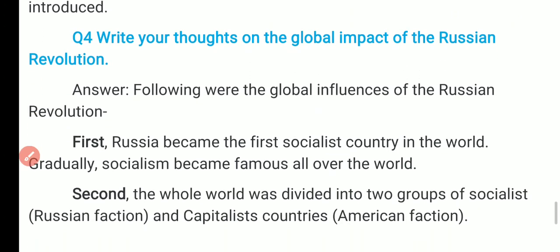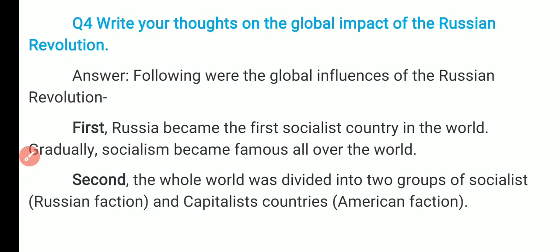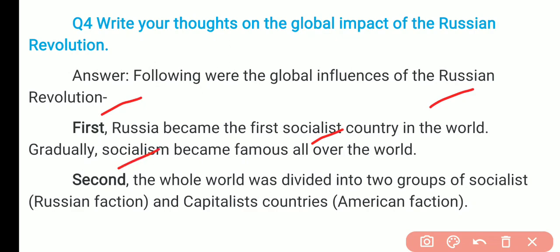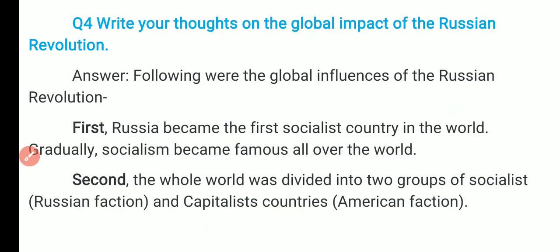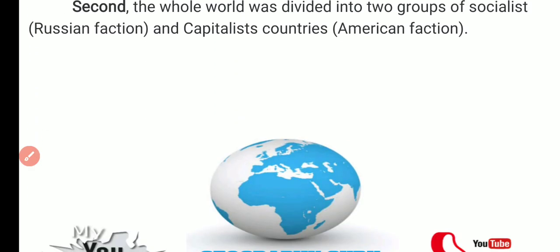Question 4: Write your thoughts on the global impact of the Russian Revolution. First, Russia became the first socialist country in the world and gradually socialism became famous all over the world. Second, the whole world was divided into two groups: the socialist Russian faction and the capitalist American faction. That's all in this worksheet. Thank you. Bye-bye. Have a nice day.